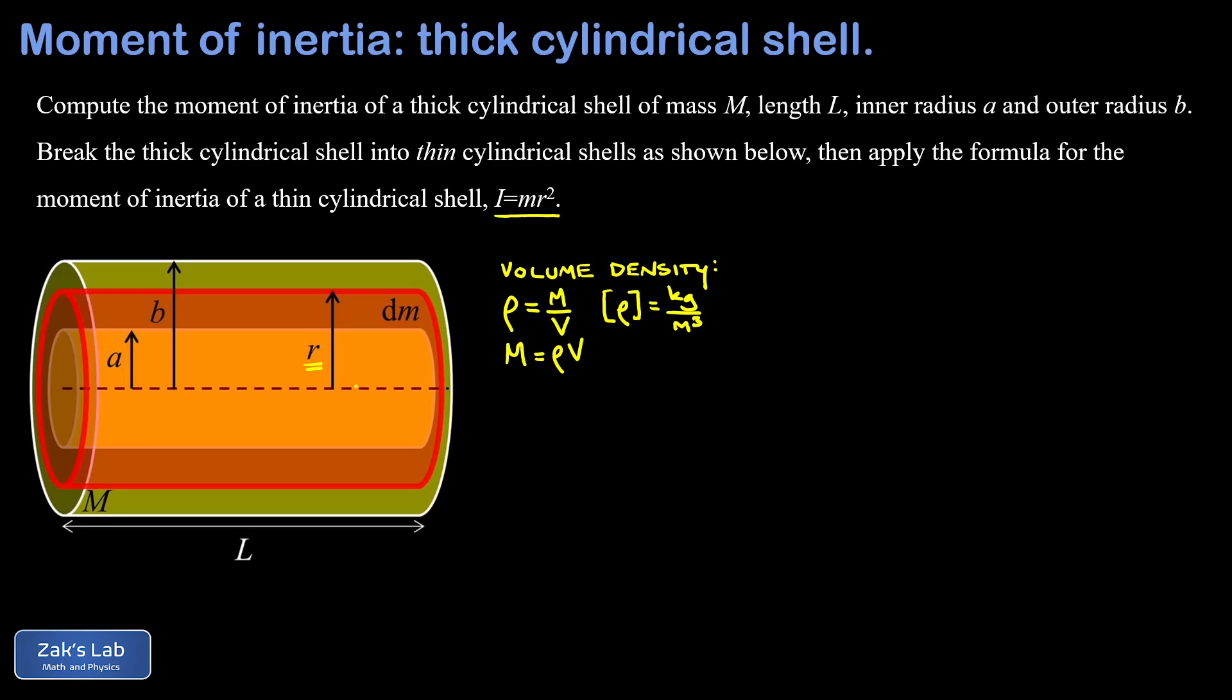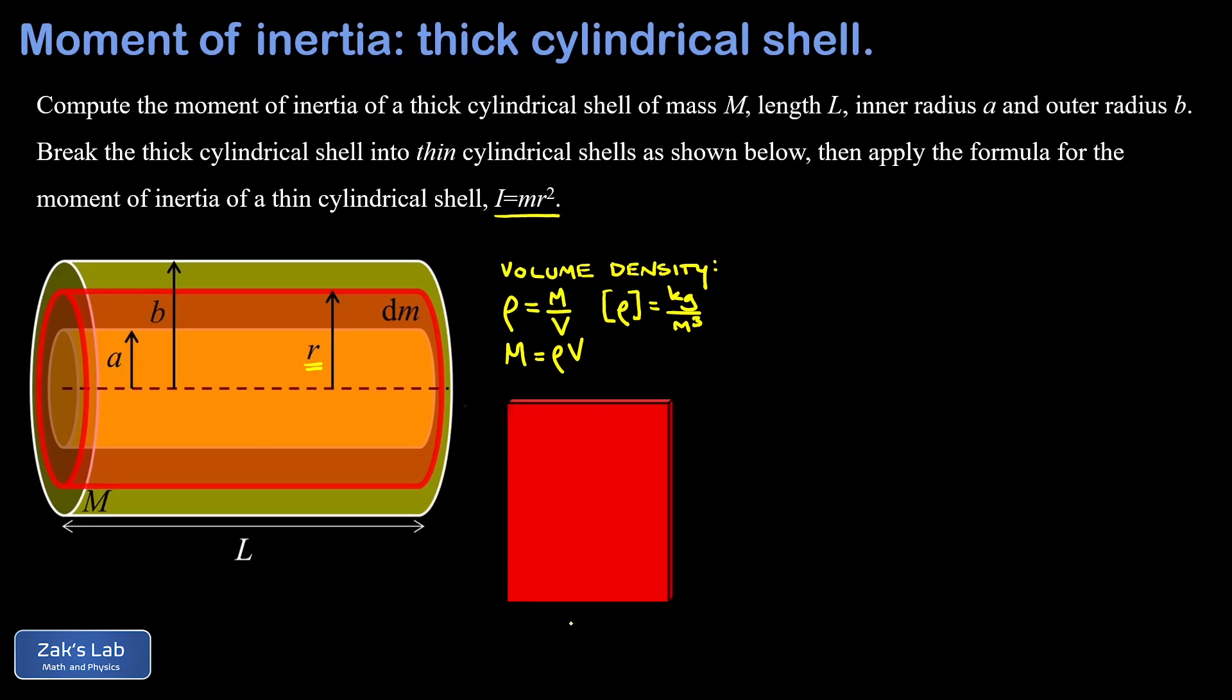We're going to slice and unroll this thin cylindrical shell, which creates a thin rectangular slab. The length of that slab is still L. The height of that slab corresponds to the circumference of the thin cylindrical shell before we unrolled it, which has a radius of r, so that height is 2π times r. The thickness of our shell is a small increment of r, that's dr. When we find the volume of this thing, it's an infinitesimal volume dv, which is just the product of length, width, and height: 2πrL dr.